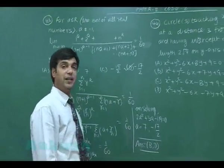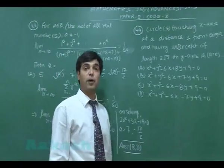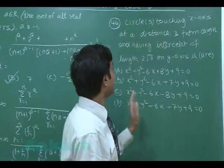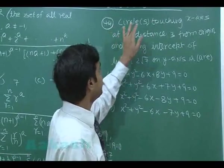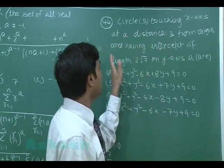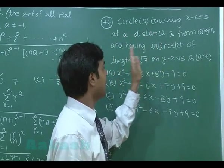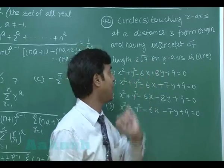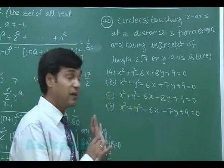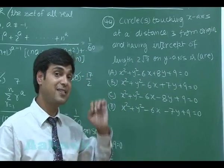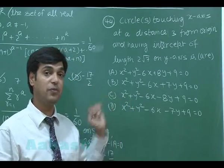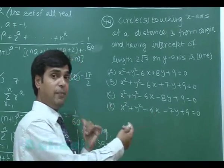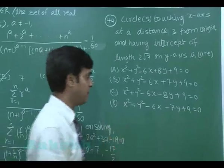Let us go to question number 44. Circles touching the x-axis at a distance of 3 units from the origin and having an intercept of length 2√7 on the y-axis. The circle touching the x-axis at a distance of 3 units from the origin can be on the right side or on the left side.